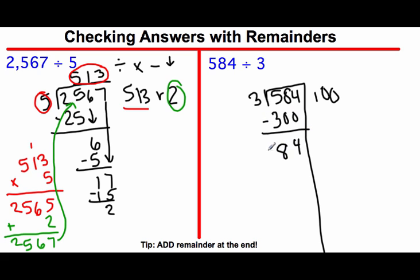And I'm left with 284. Let's see. I know that 80 times 3 or 8 times 3 is 24, so I'm going to take out 240 groups. I'm left with 44.